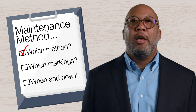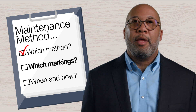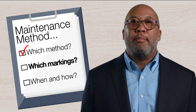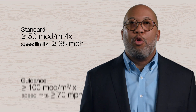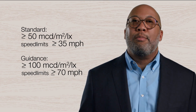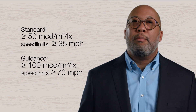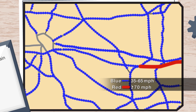Once you have selected a method, you can determine which roadways and pavement markings to include in the method. The maintenance method is required on roadways with speed limits of 35 miles per hour or greater. On roadways with speed limits of 70 miles per hour or greater, it is recommended the method provide for a longer viewing distance by using a higher minimum retroreflectivity level. Having an inventory of all roadways under your jurisdiction will be helpful for determining the extent of your system that will be covered by your method.